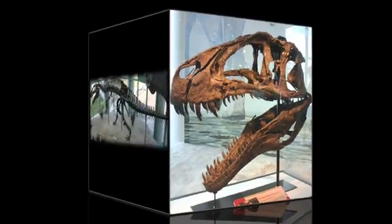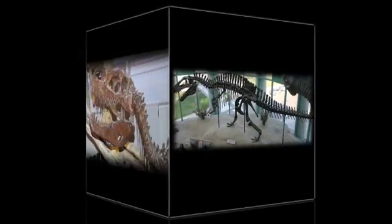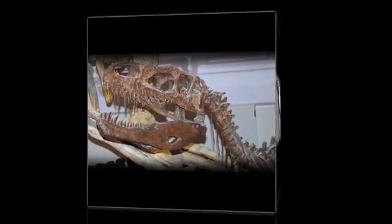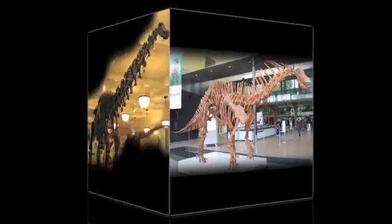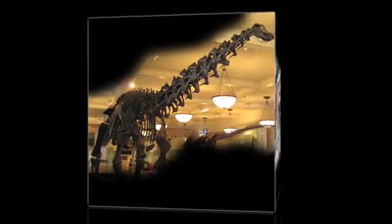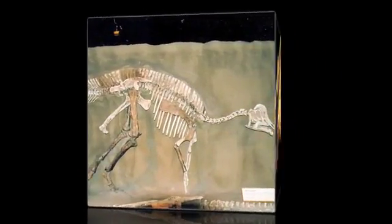Macroevolution is evident in abundance in the fossil record. Species come and go, and when they emerge, it is always from an ancestor.